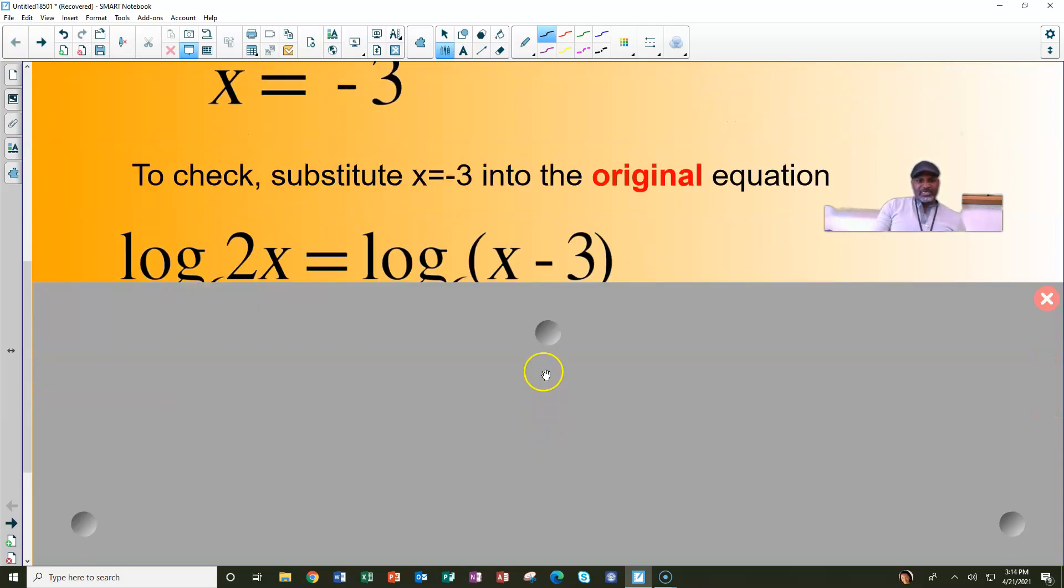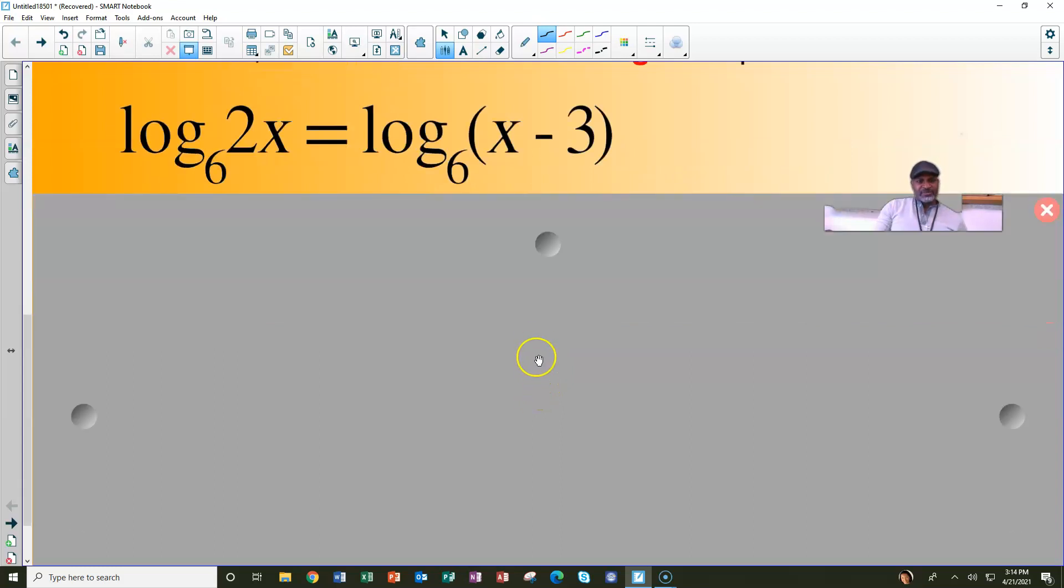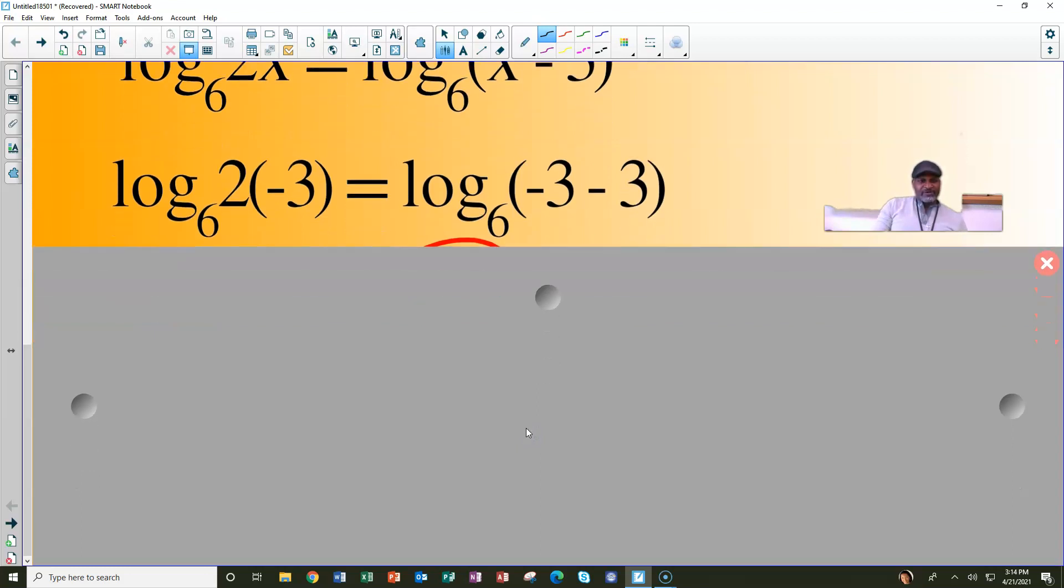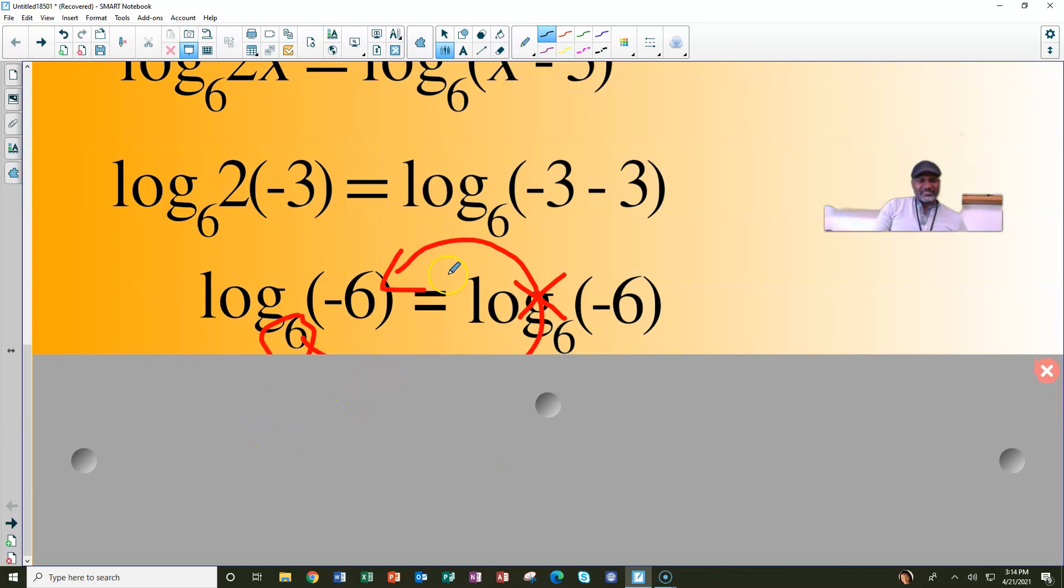When we do that, this is the original equation. We go ahead and put a negative 3 wherever x is, and we'll see on both sides, we're going to end up with log base 6 of negative 6.